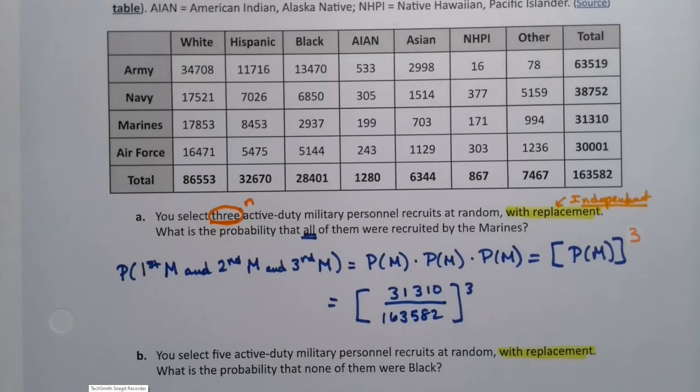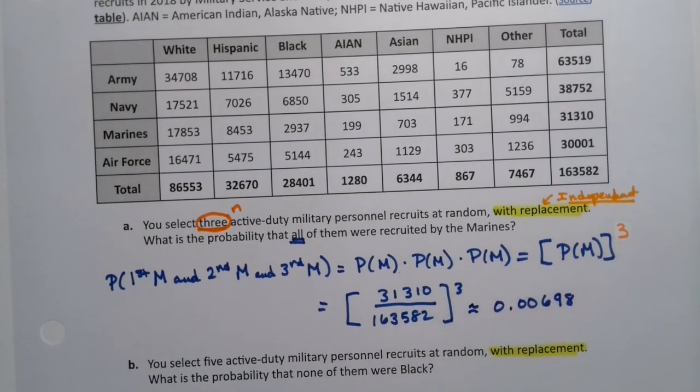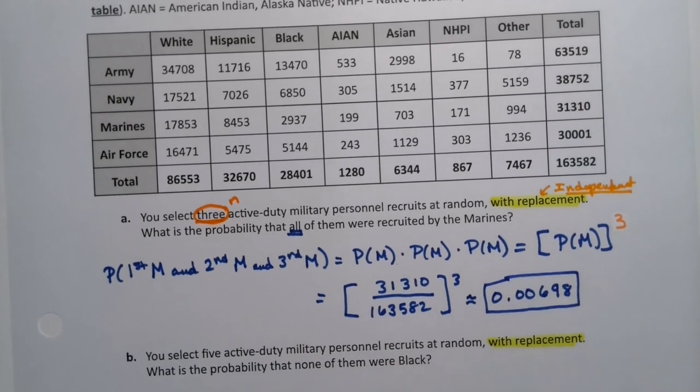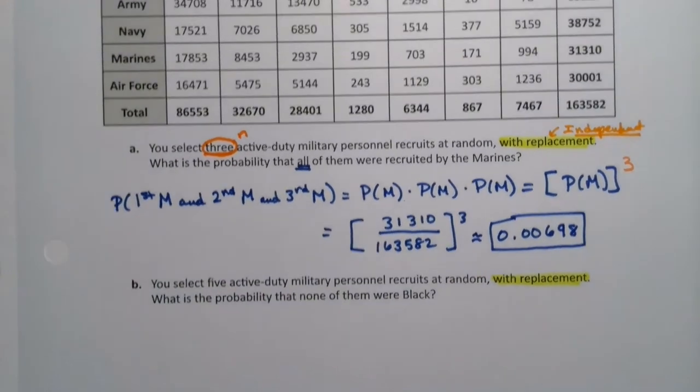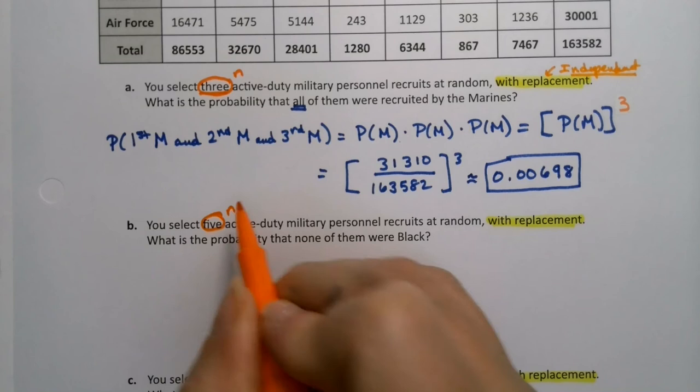So I think it's 0.00698. Now you select five active military, active duty military recruits, five of them. So there's your N. I want the probability that none of them were black.